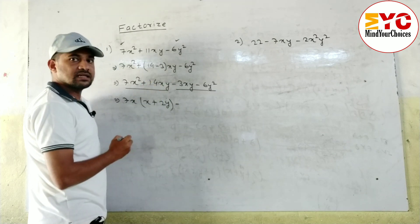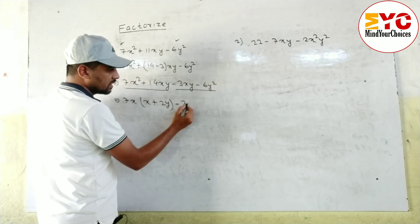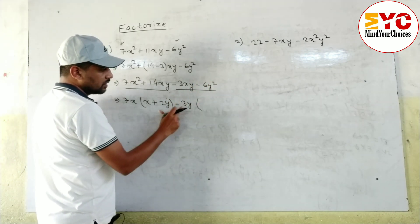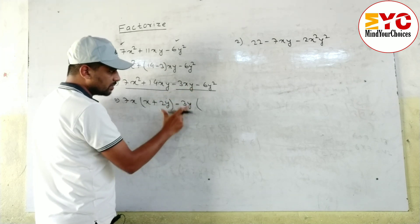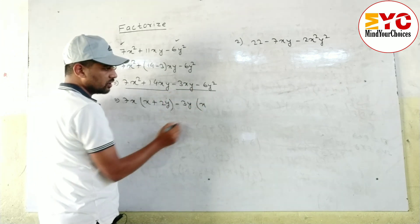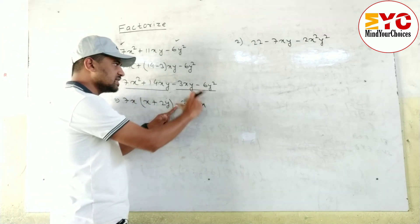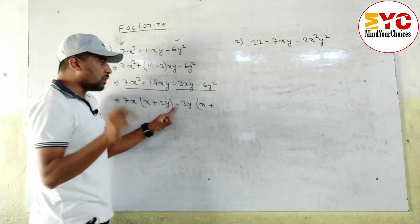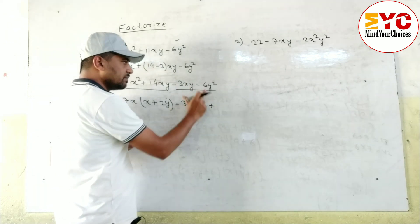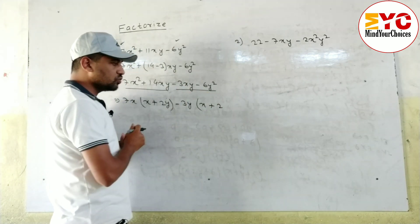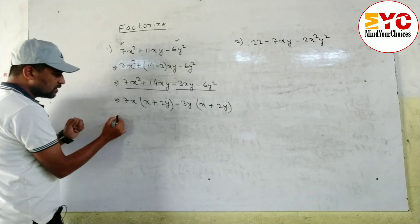From the last two terms, -3xy - 6y², the third term is negative so we take minus as common. The common between 3 and 6 is 3, and y is common from xy and y². We take out -3y, giving us -3y(x + 2y). Since minus is common, we change the sign: minus becomes plus, so the bracket becomes (x + 2y).